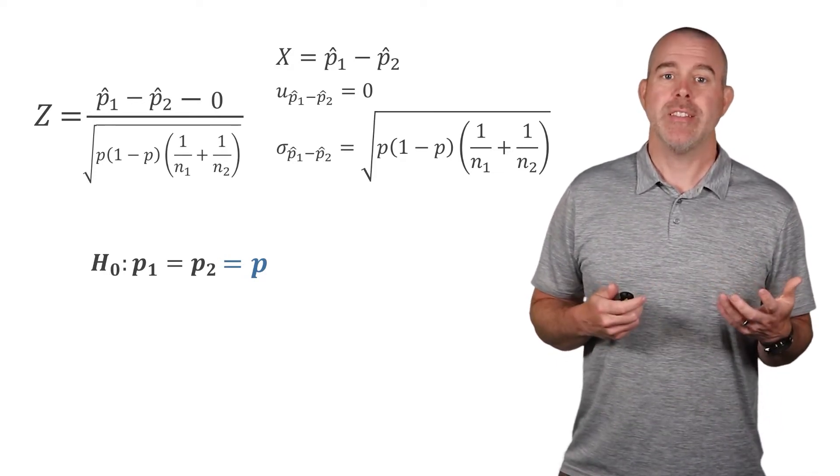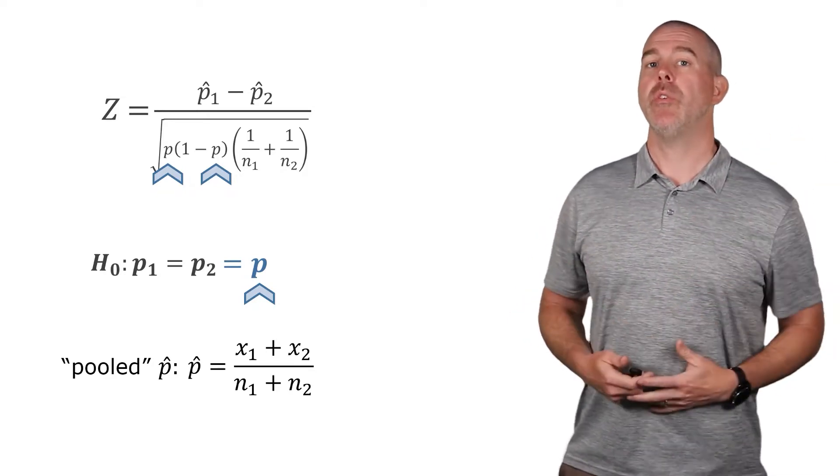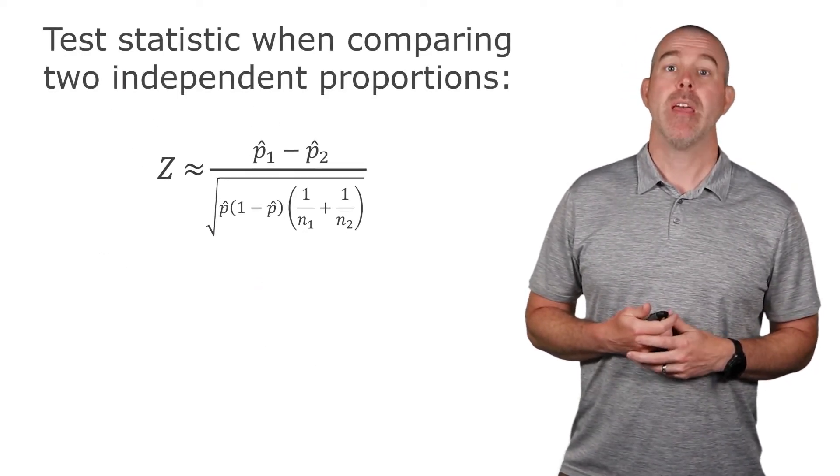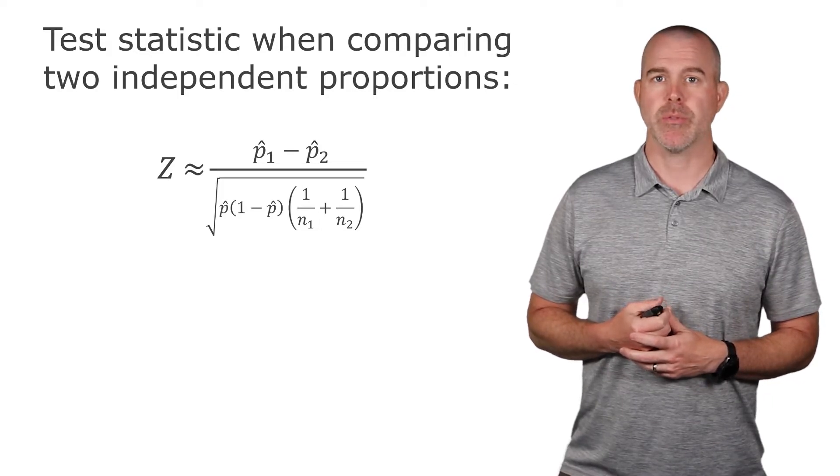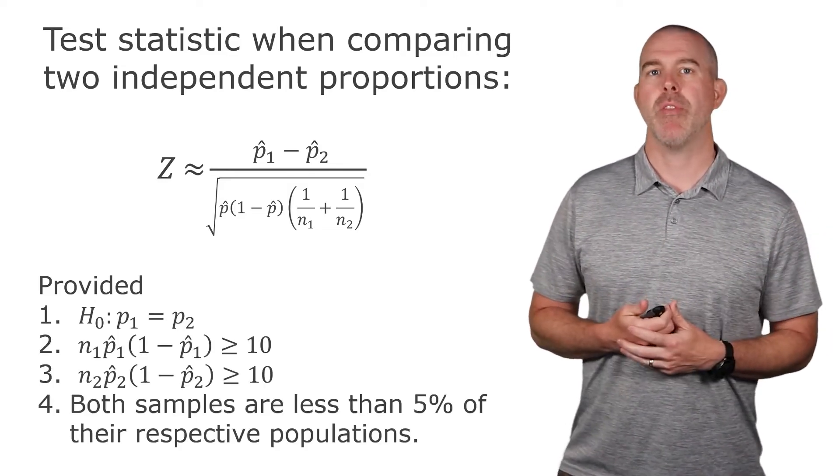Now we can't find a Z score there because we don't have a P. We need to figure out something for that P. What we can do is we can pool together and get a total proportion. So what we would do there is we would add up the total observations in both samples and divide by the total sample size. And that's a pooled proportion. And again, you only do this if your null hypothesis is that the two proportions are the same. So then in our formula for Z, those become this pooled P hat. This is what we're going to use as our test statistic when we compare two independent proportions. And the criteria here, this is provided the null hypothesis has to be that the proportions are equal, and then we have those same three conditions we mentioned earlier.